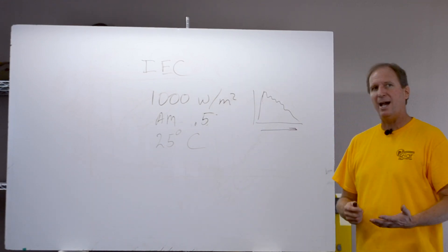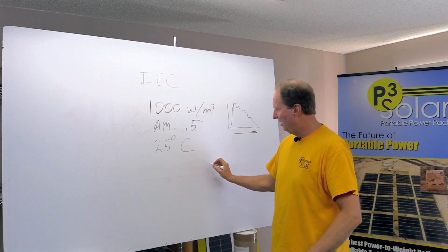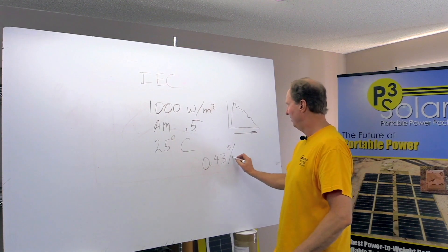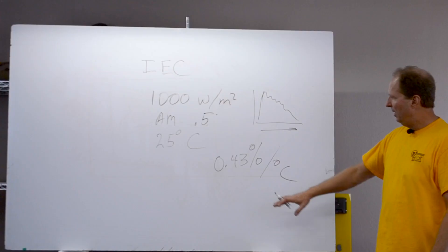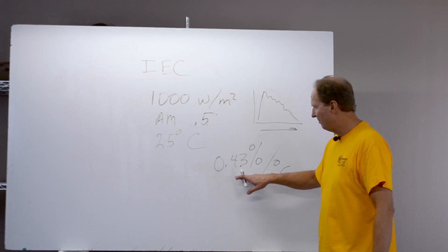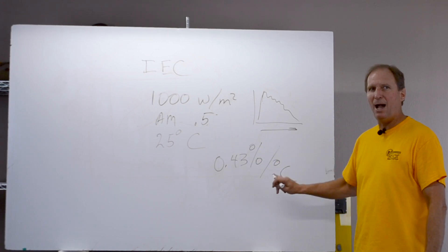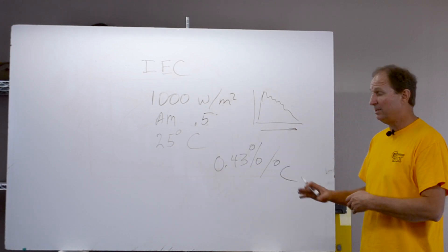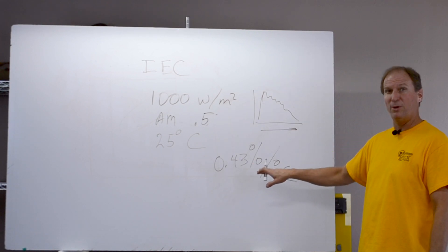So now all solar panels have a temperature coefficient. The six panel you have is 0.43 percent per degree C. So as you go above 25 C, you start losing 0.43 percent of its power for every degree you go above 25 C. Conversely, if you go below 25 C, you start adding 0.43 percent of its power.